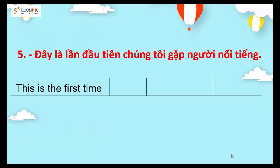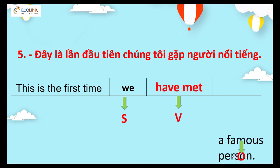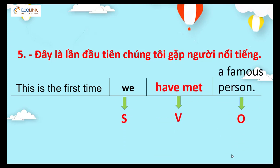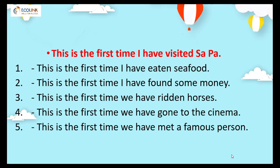'This is the first time we have met a famous person.' Have met — động từ gặp gỡ là meet, chuyển sang phân từ 2 là met. 'This is the first time we have met a famous person.' Vậy các bạn sẽ có thời gian để xem lại cả 5 câu trong phần chữa bài ngày hôm nay. Chú ý với hiện tại hoàn thành các bạn nhé.